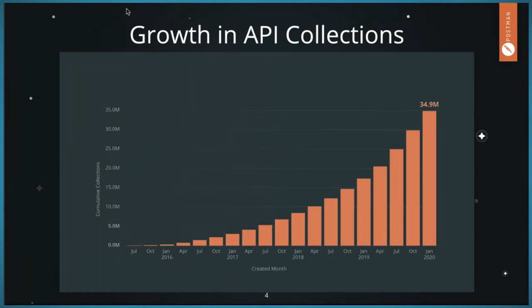One way to look at the growth of APIs is to look at the consumer side of things, and that's really where Postman sits as an API consumer tool, at least initially. We've seen some movement towards the producer side as well. If we take a look at the number of collections created in Postman, it's both a sign of product adoption and an indicator of the popularity of APIs. Postman was introduced at a pivot point in the API craze, and today we're looking at almost 35 million collections in Postman.